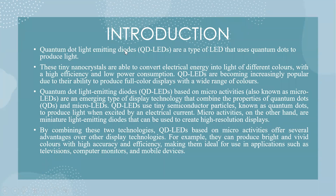Quantum dot light emitting diodes are a type of LED that uses quantum dots to produce light. These tiny nanocrystals are able to convert electrical energy into light of different colors. Quantum dot light emitting diodes based on micro activities, also known as micro LEDs, are an emerging type of display technology that combine the properties of quantum dots and micro LEDs.